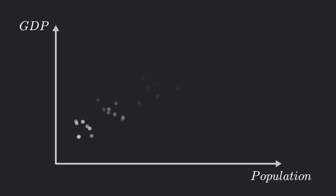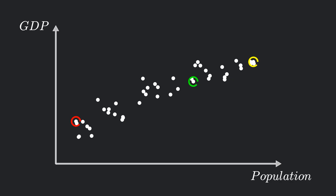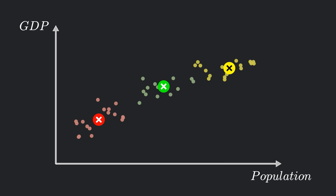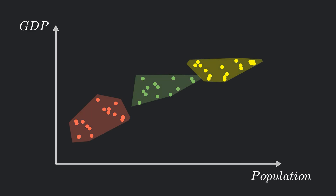Let's see this in action. We will take the same GDP vs population dataset from earlier and this time, suppose we want 3 clusters. So we initialize 3 centroids by choosing 3 points from the dataset. Once that's done, the k-means algorithm starts running as usual. In each iteration, data points are assigned to the nearest centroid, the centroids move to the average position, and the process repeats until the centroids settle into their optimal positions. And this is not just an animation — k-means is actually running in the background on the dataset. You can try it out yourself; I've added the code in the description below.